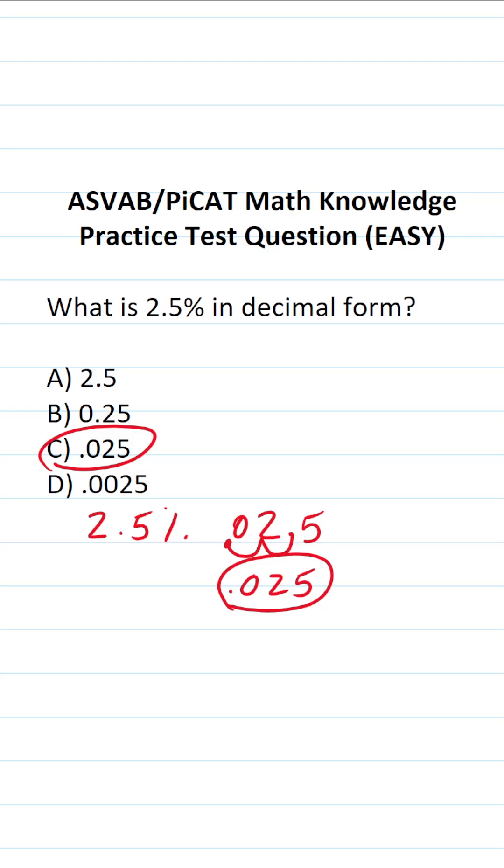Let's say I asked you to write 9% in decimal form. Again, get rid of that percentage sign. Your decimal in nine is right there. Move it one, two places to the left. Add your zero placeholder. We can see that 9% is the same thing as 0.09.